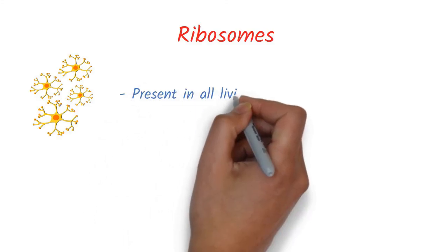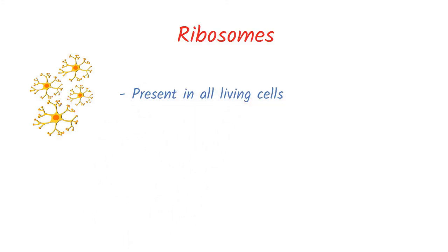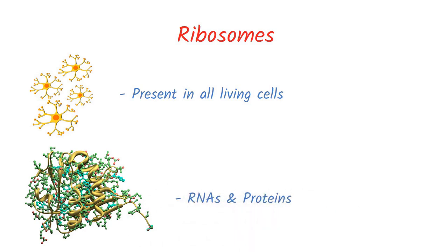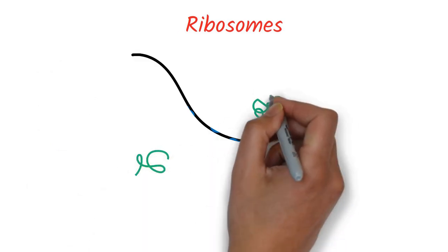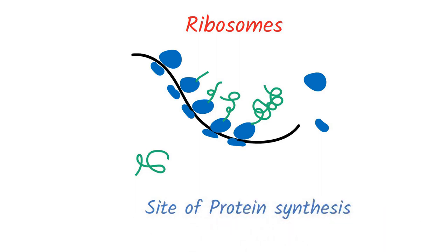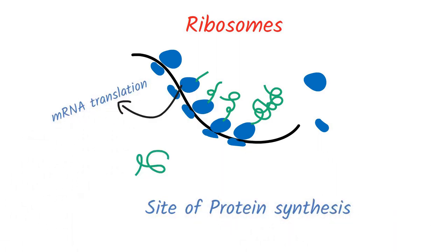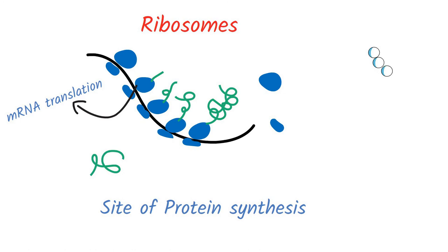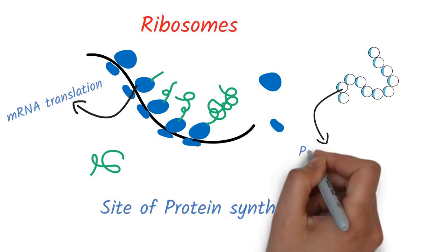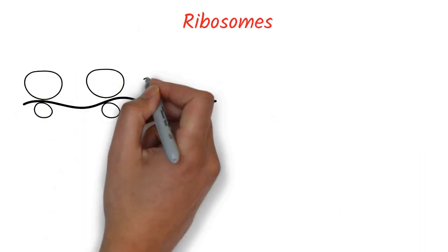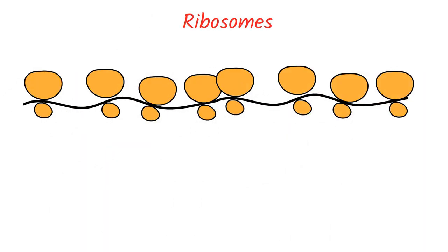Ribosomes are present in all living cells. They are made up of several RNAs and proteins. They act as the site of protein synthesis, where mRNA translation takes place. Ribosomes link each amino acid, in the order specified by the codons on mRNA, to form a polypeptide chain. Several ribosomes come together to form a polysome during protein synthesis.